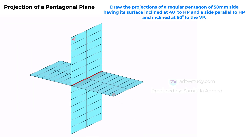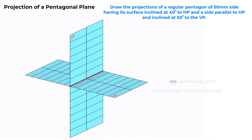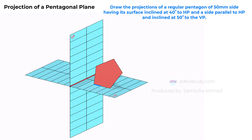Let's understand this visually in a three-dimensional view. The question states a pentagon with a 50 mm side, its surface inclined at 40 degrees to the horizontal plane, and one of its sides parallel to the HP. We can see in this 3D view how the pentagon will appear. The surface of the same plane is angled at 50 degrees with the vertical plane. Now let's draw the projections in a two-dimensional view.